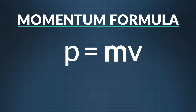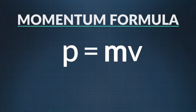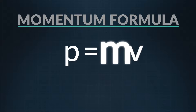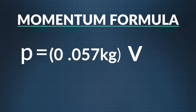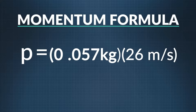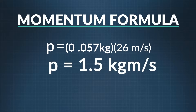We use velocity rather than speed because momentum is a vector quantity. The formula looks like this: P, which stands for momentum, equals mass multiplied by velocity. If the egg weighs 0.057 kilograms and its velocity is 26 meters per second, we multiply mass times velocity and find that its momentum is 1.5 kilograms times meters per second.